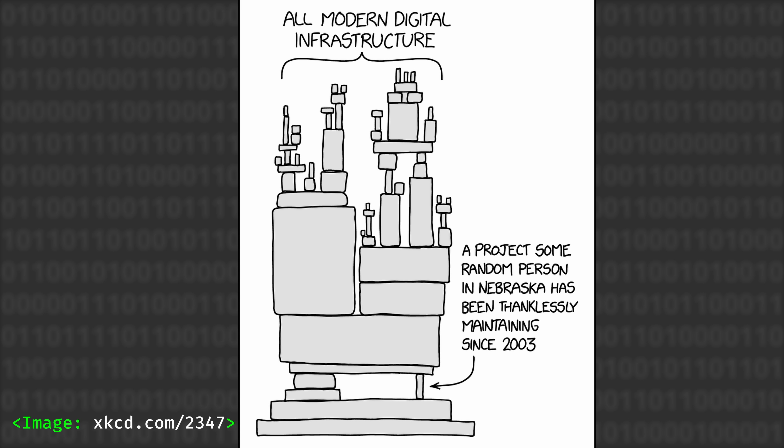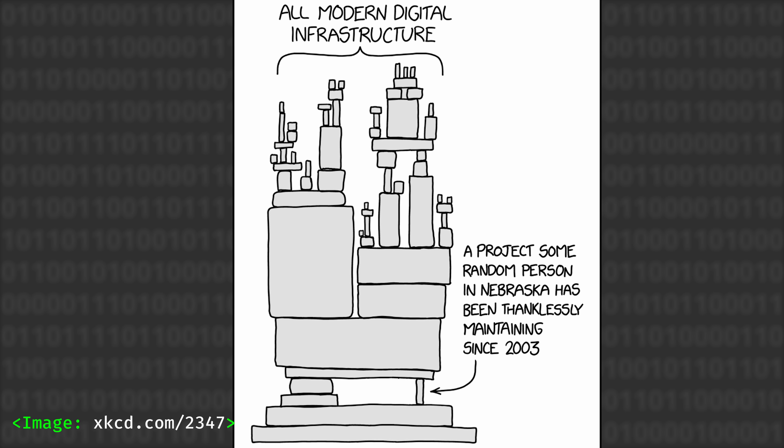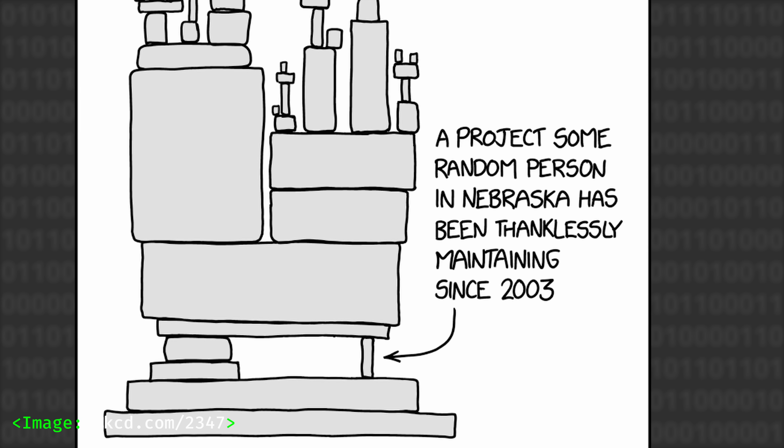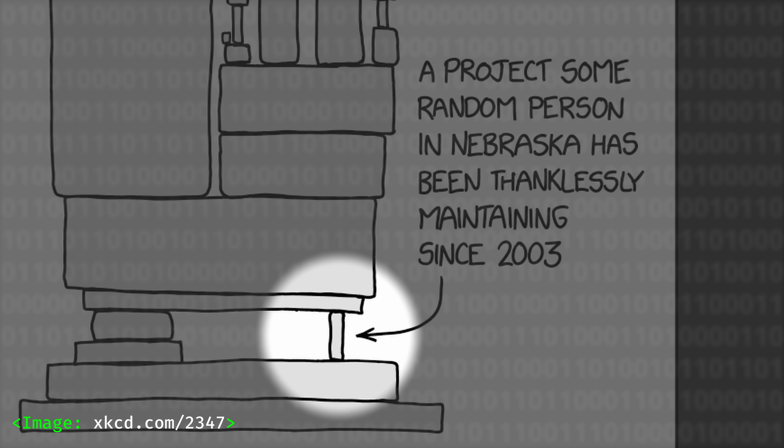There's an XKCD cartoon showing all modern digital infrastructure as a very elaborate, carefully constructed device — but with one little wonky leg, labelled 'tiny project maintained by one man in Nebraska since 2002 or something like that.' This is a story of what happens if somebody very deliberately attacks that wonky leg.